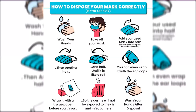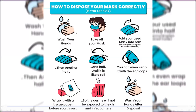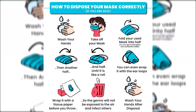How to dispose of the mask: before removing the mask, ideally you should wash your hands first. Firstly, wash your hands. Secondly, take off the mask, then fold it, make another fold, then another fold, and then roll it. Use a tissue paper and wrap the mask in the tissue paper, then throw it in the dustbin which is the designated disposal bucket for the mask. Then, in the end, wash your hands again.